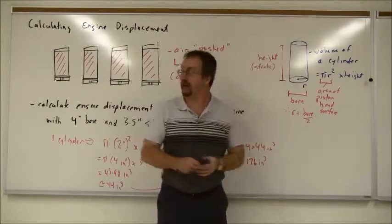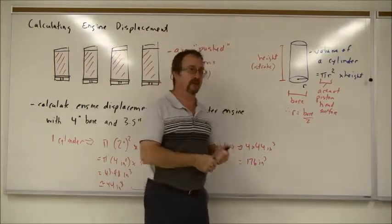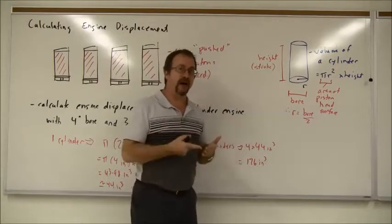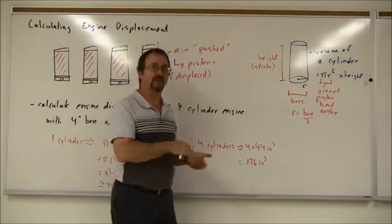And the height, well, that's the distance that the piston travels, that's the stroke. So when we want to use this formula, pi r squared times height, we'll actually use pi times half the value of the bore squared times the stroke distance.